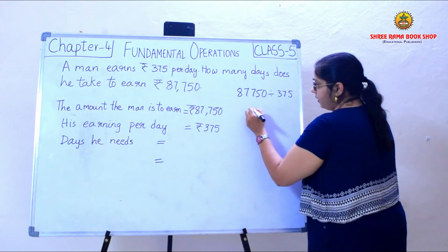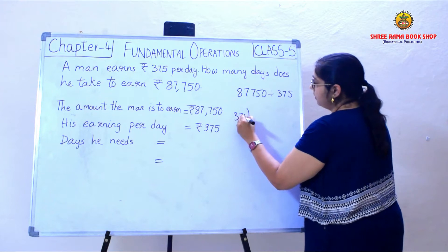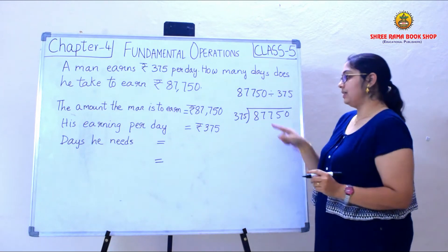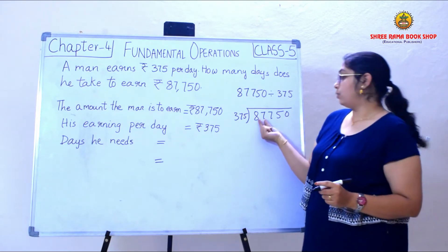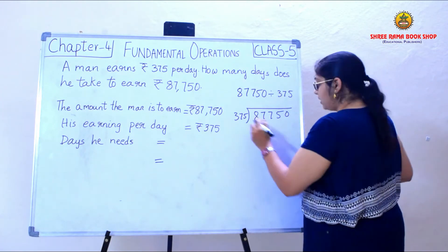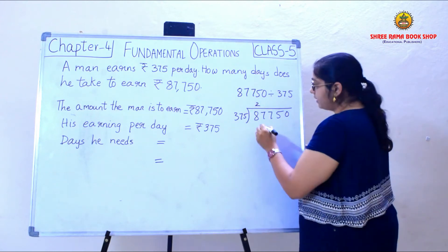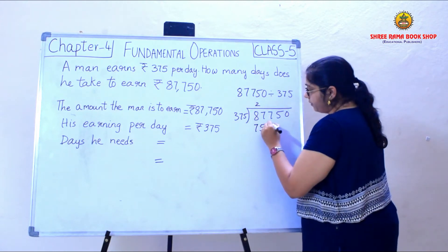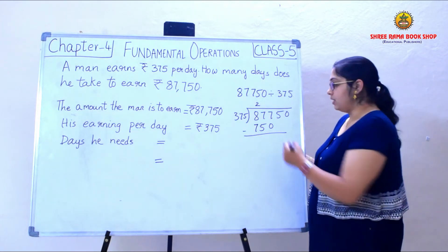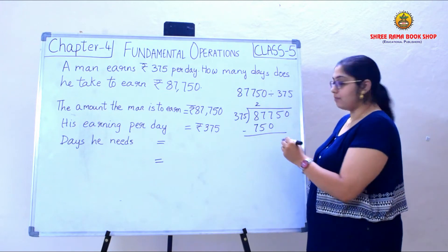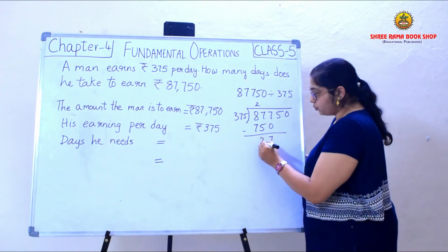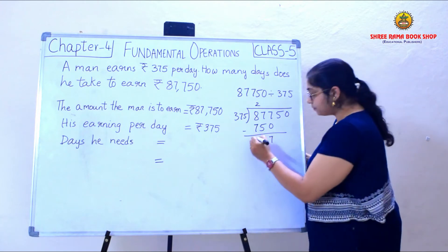I need to divide the total amount by the amount per each day to find the number of days he needs. I write 375 as the divisor and 87,750 as the dividend inside. I consider the first 3 digits because 87 is less than 375. So 375 times 2 is 750. Subtracting: 7 minus 0 is 7, 7 minus 5 is 2, 8 minus 7 is 1.